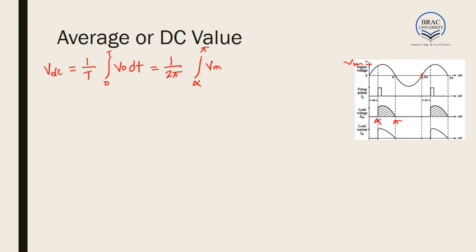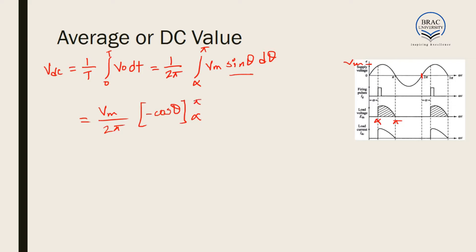Considering Vm as the peak voltage, we integrate Vm sin θ dθ. We can bring Vm out of the integration and divide by 2π. Integrating sin θ gives minus cos θ evaluated from alpha to pi. So we get Vm over 2π times (minus cos π plus cos α). Since cos π equals minus 1, minus cos π equals 1.